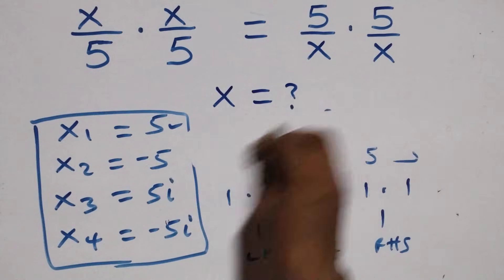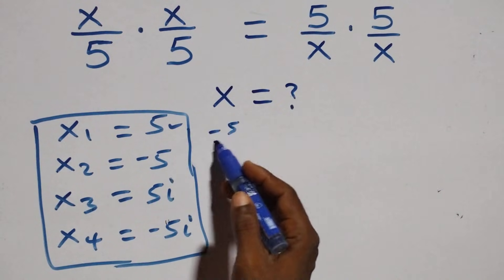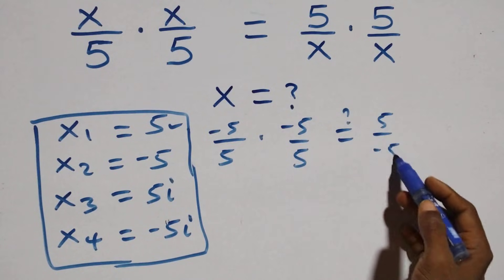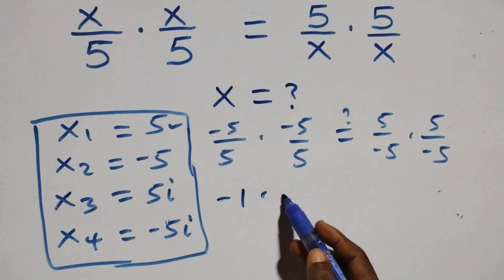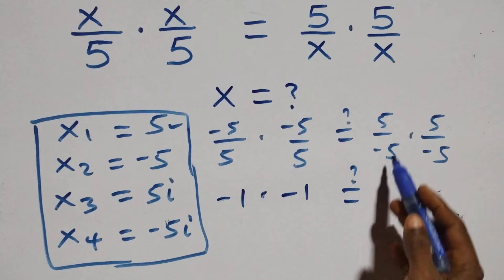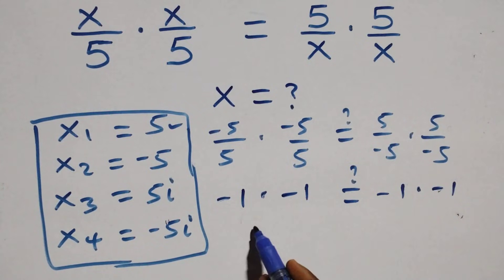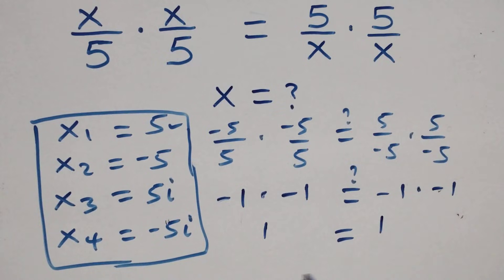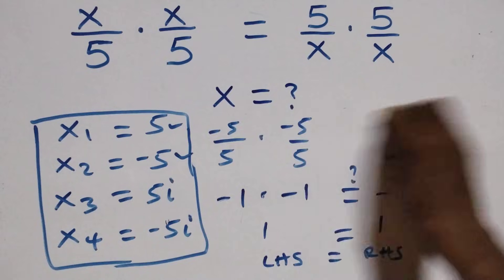Substituting x equals minus 5: the equation becomes (−5/5)(−5/5) equals (5/−5)(5/−5). That is (−1)(−1) equals (−1)(−1). Minus times minus is plus, so this becomes 1 equals 1. Left hand side equals right hand side, and x equals minus 5 also satisfies the given problem.